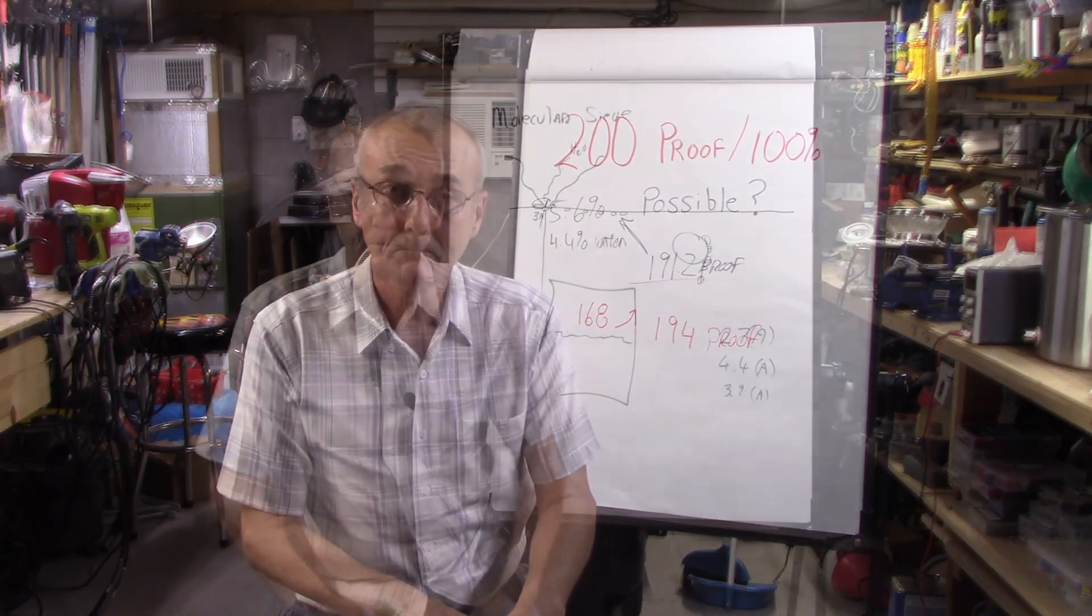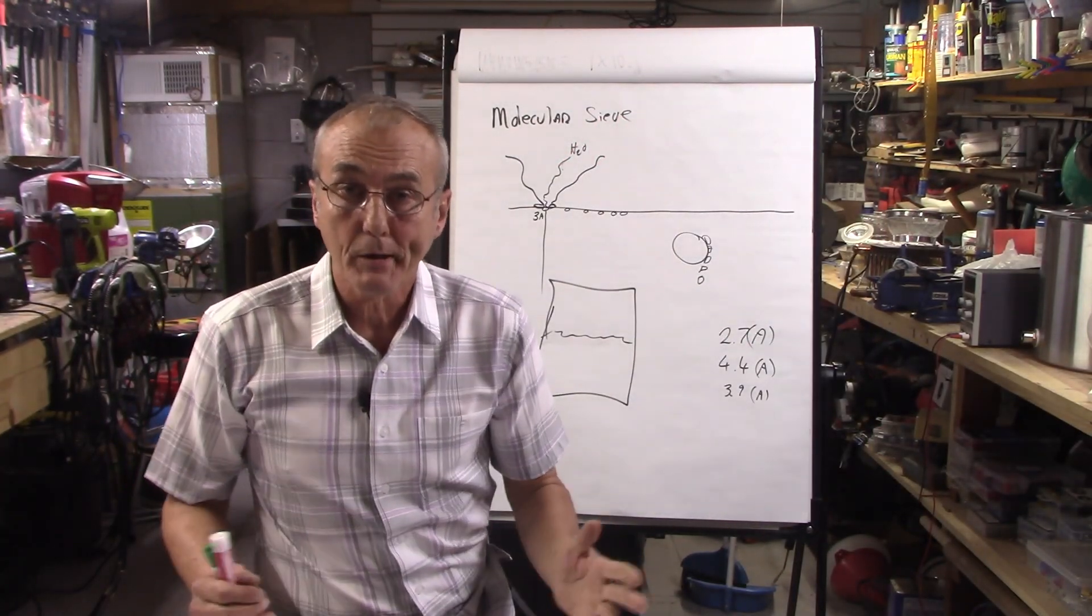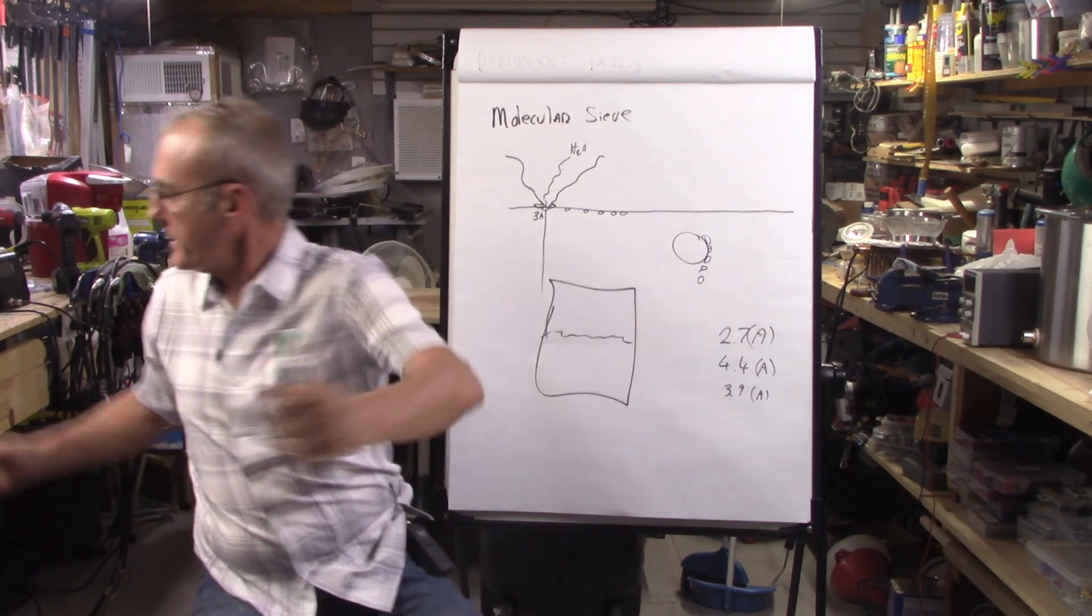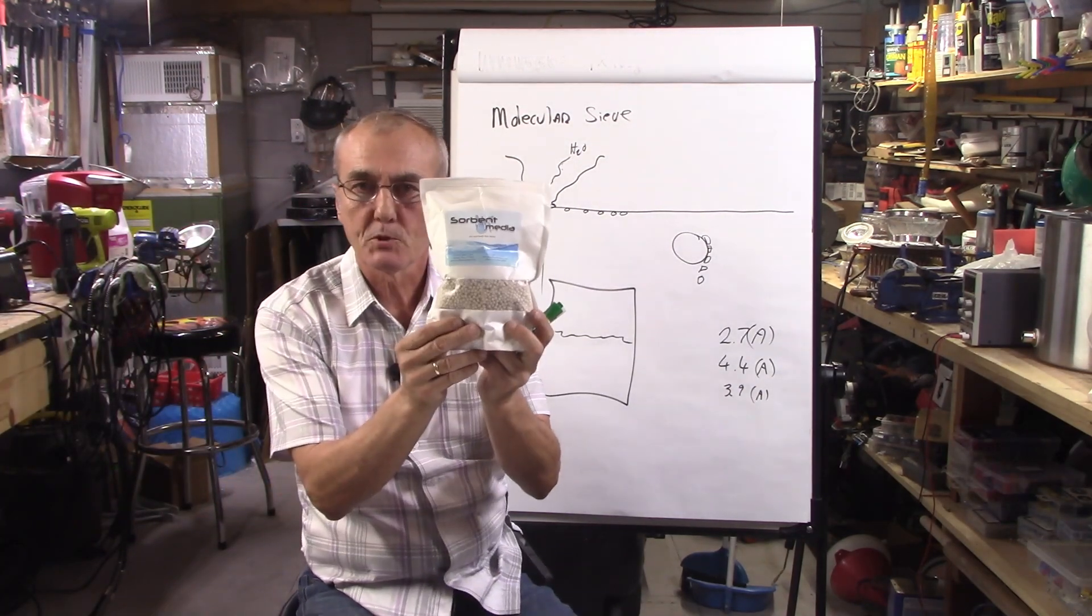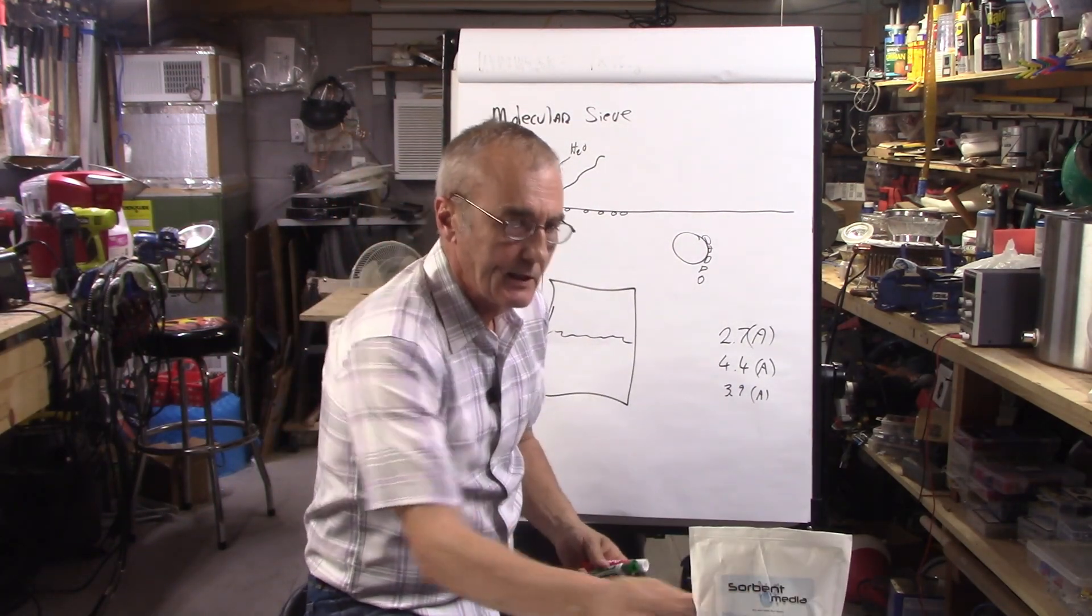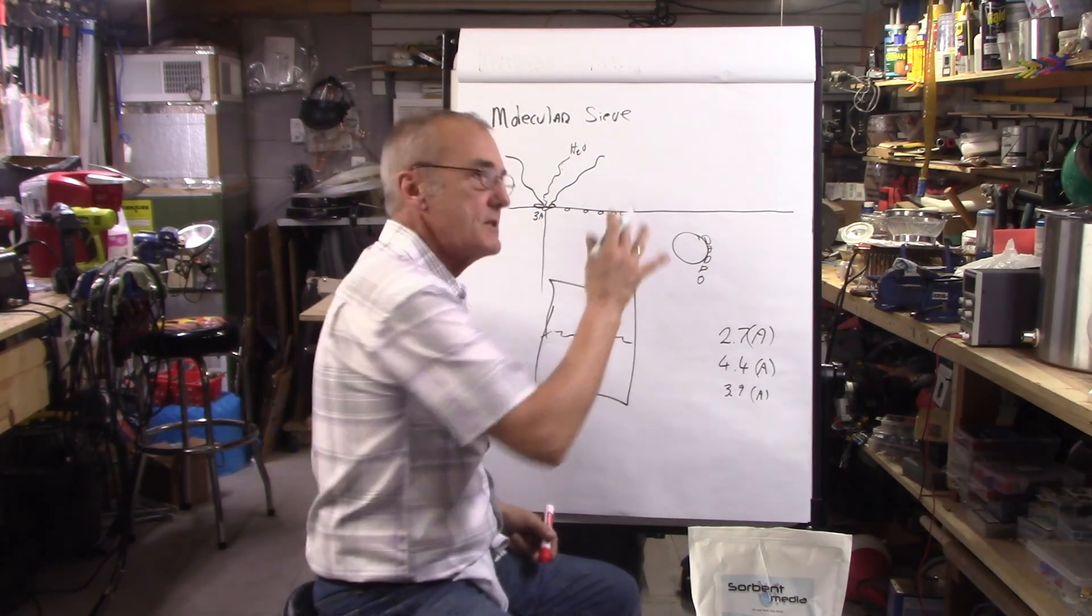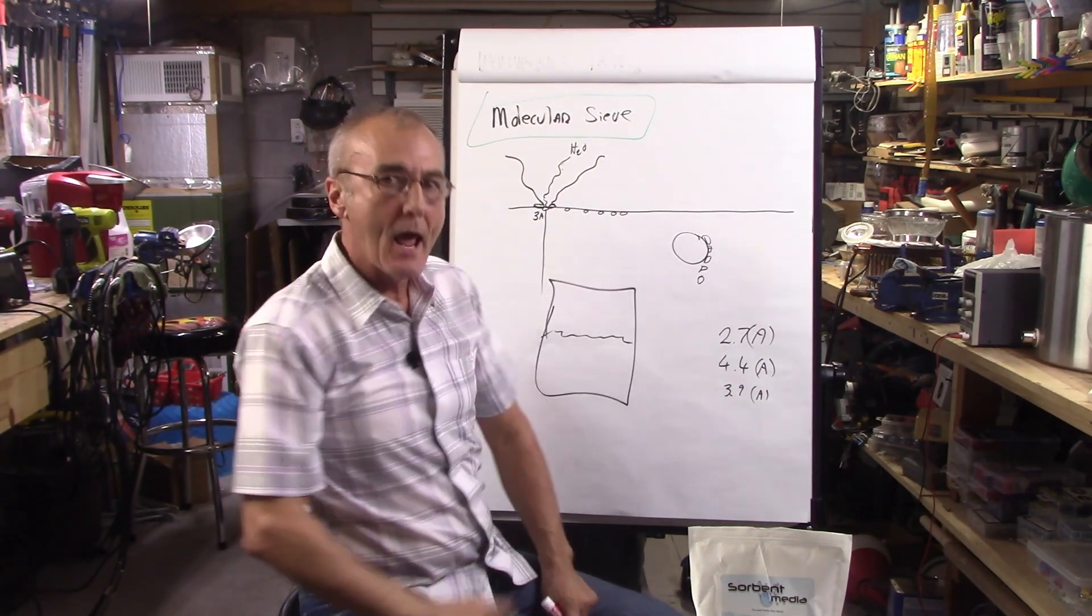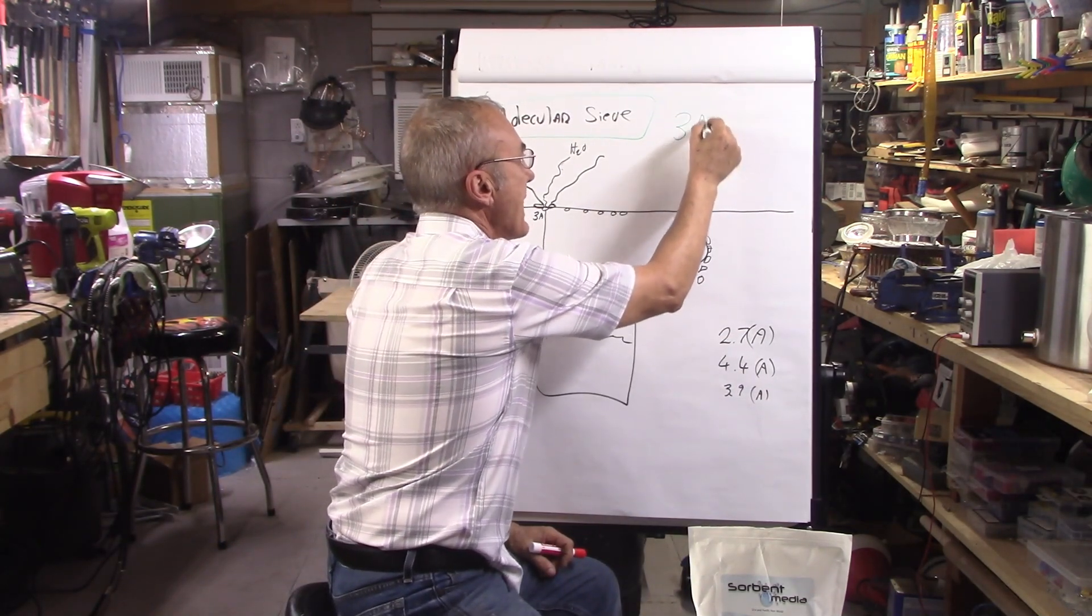And again, if you're just hell-bent on doing this, be my guest. Real simple. You need to get yourself some molecular sieves. That's what they're going to look like when you order them. Just make sure that you order them in the proper size.